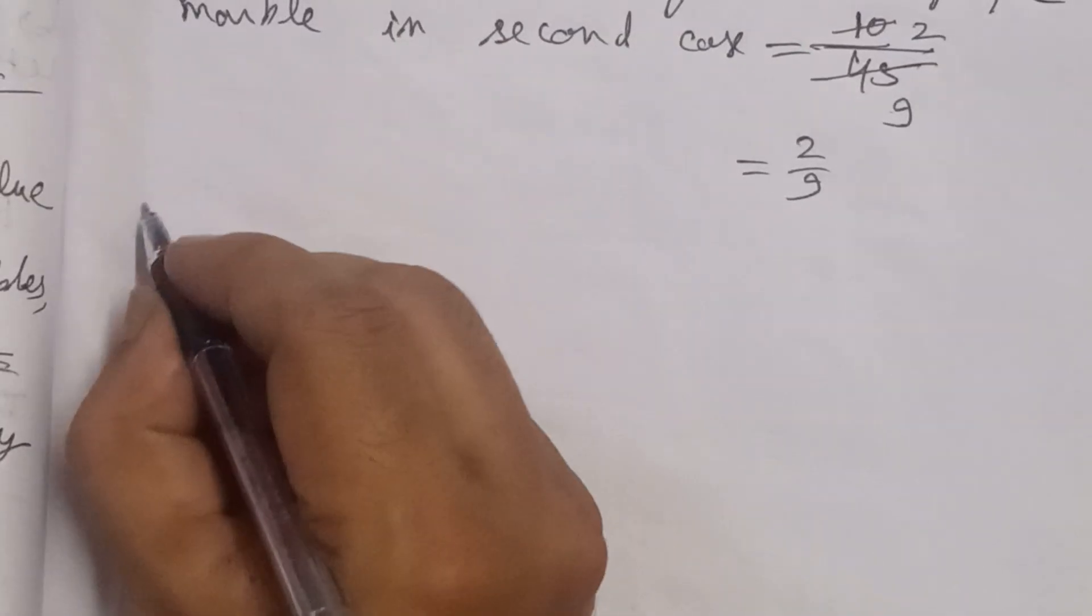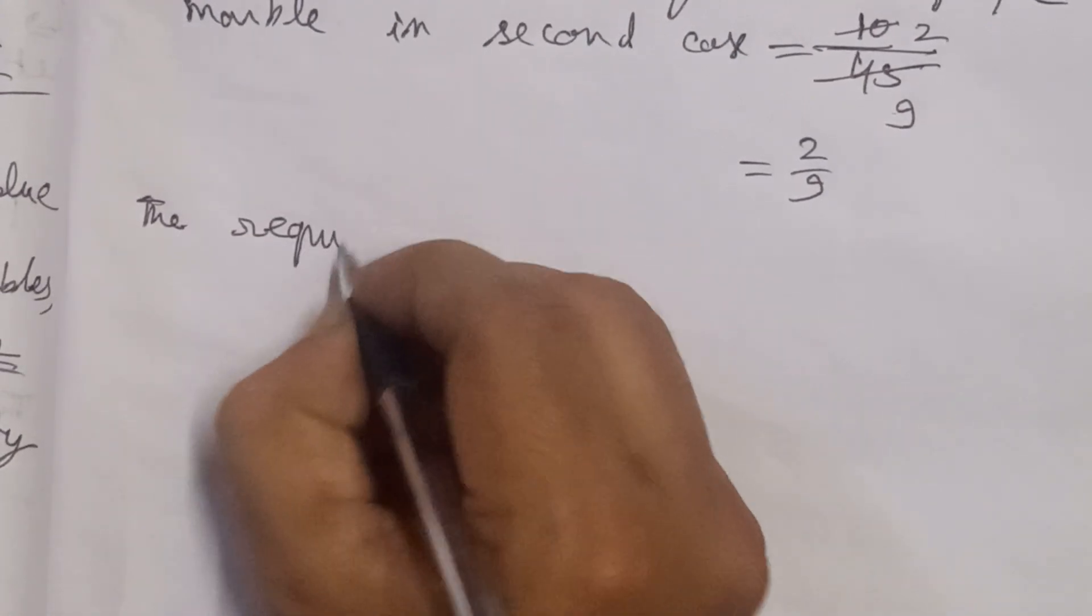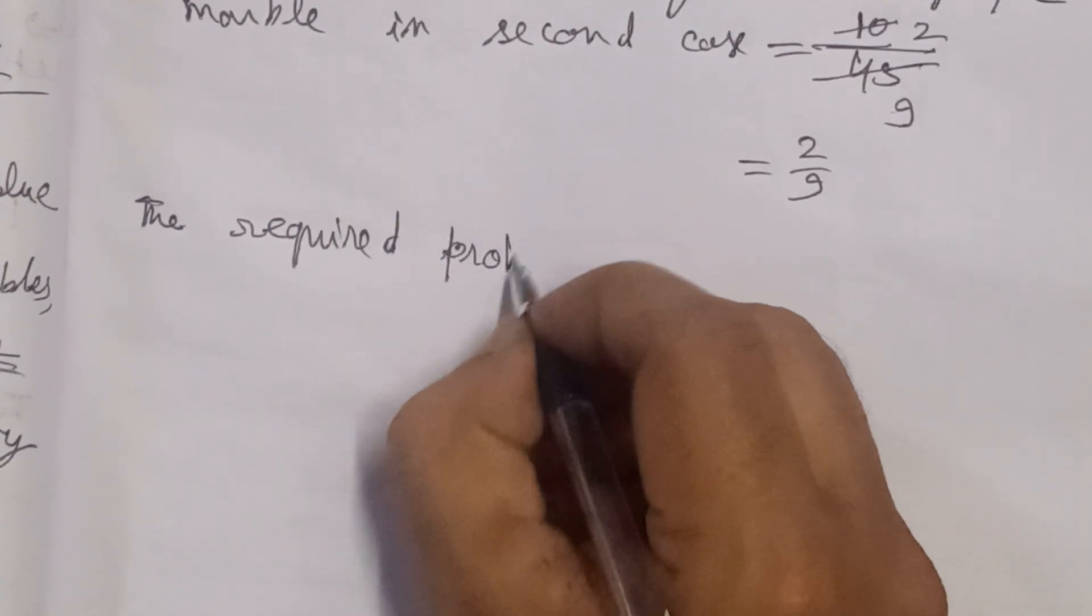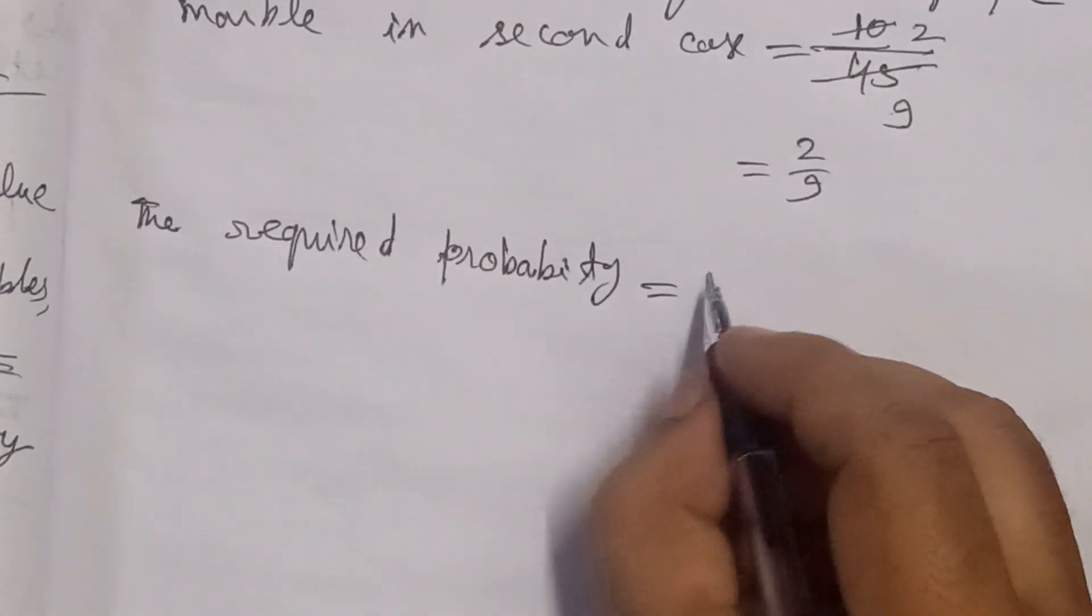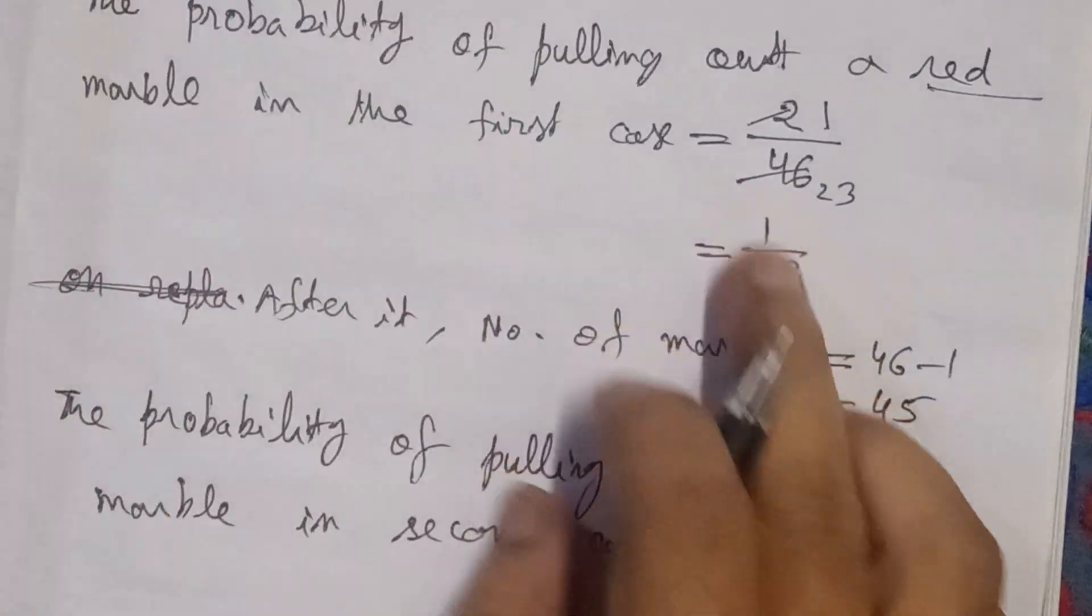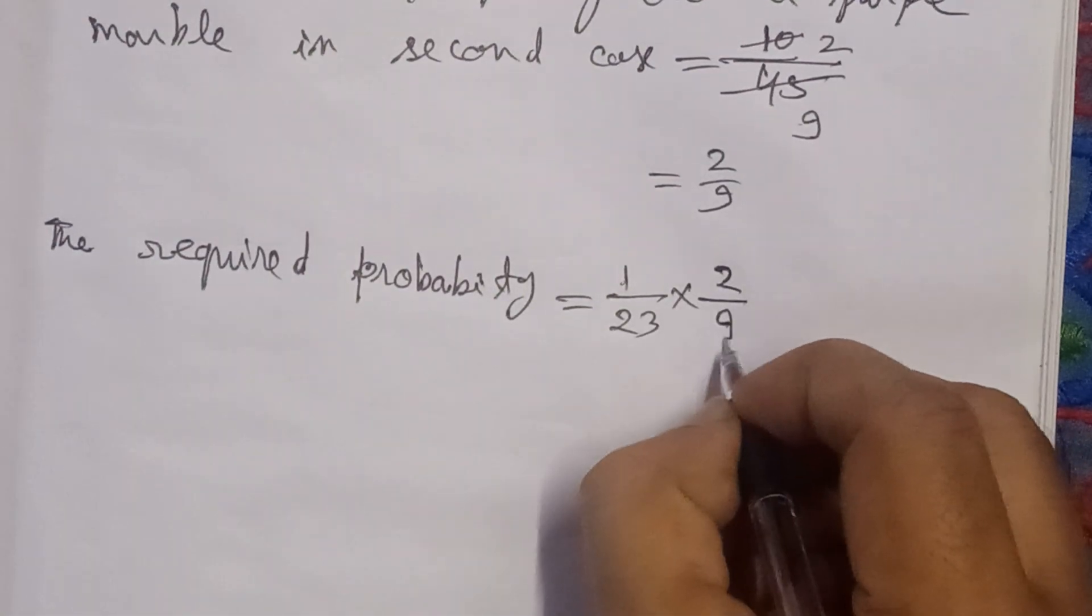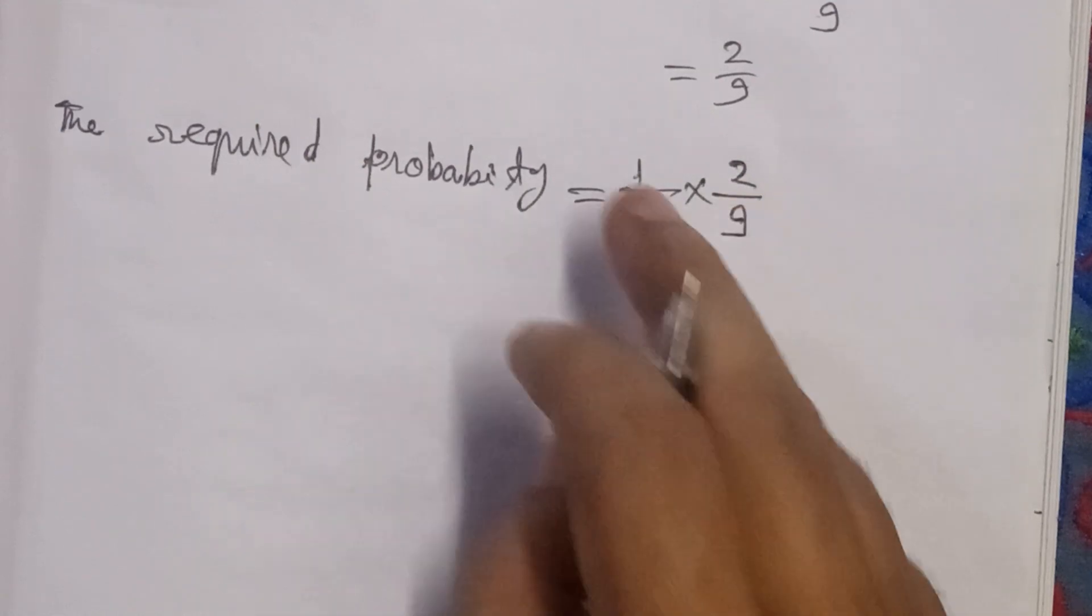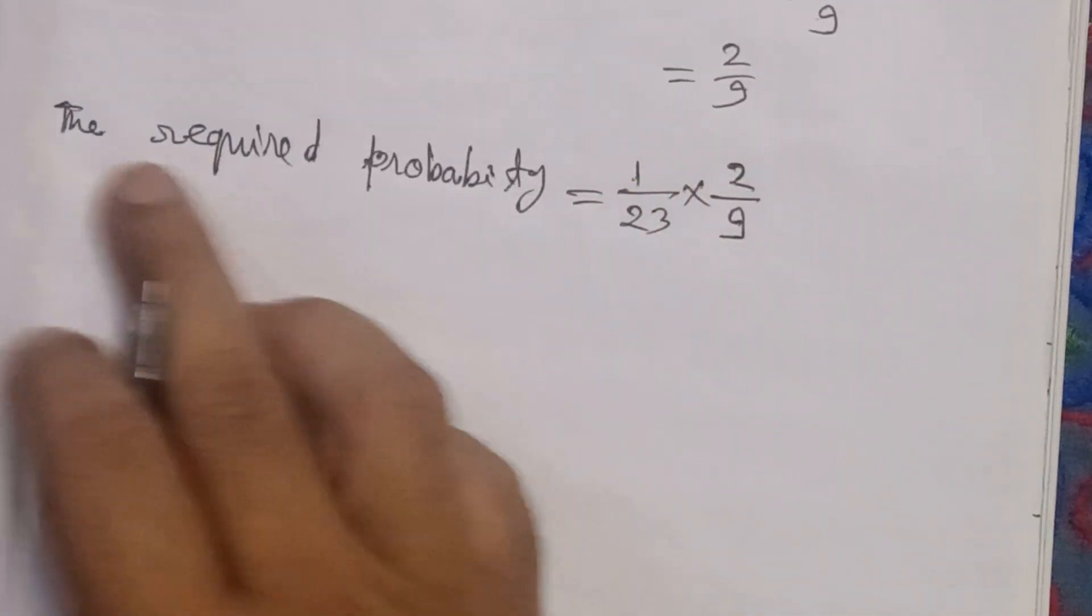The required probability: these are two dependent events. The first event is drawing red, the other is drawing purple. These are dependent events because the first one affects the second.